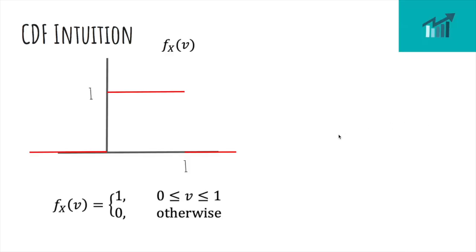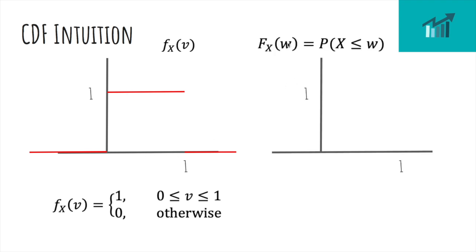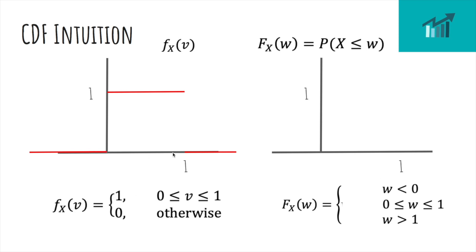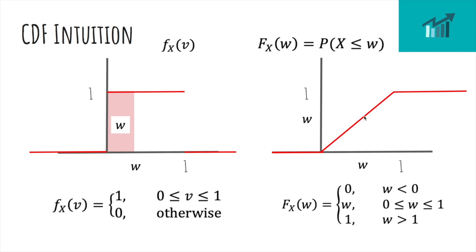Now let's talk about a CDF, or cumulative distribution function. Here is the density function of a uniform random variable — flat at 1 from 0 to 1. This is valid because the area under the curve is 1 times 1, which is 1. The CDF of x, capital F sub x of w, is the probability that x is less than or equal to w — the area all the way to the left of w. If w is less than 0, the probability is 0, because x is always between 0 and 1. If w is greater than 1, the probability is 1, because all the area is already to the left. For any w between 0 and 1, the probability is w times 1 — the area of the rectangle. So the CDF looks like a ramp, representing the cumulative probability of being less than w.